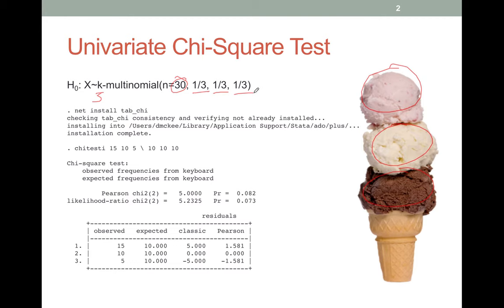So we survey our people, we get back numbers. Say fifteen people prefer strawberry, ten preferred vanilla, and five preferred chocolate.